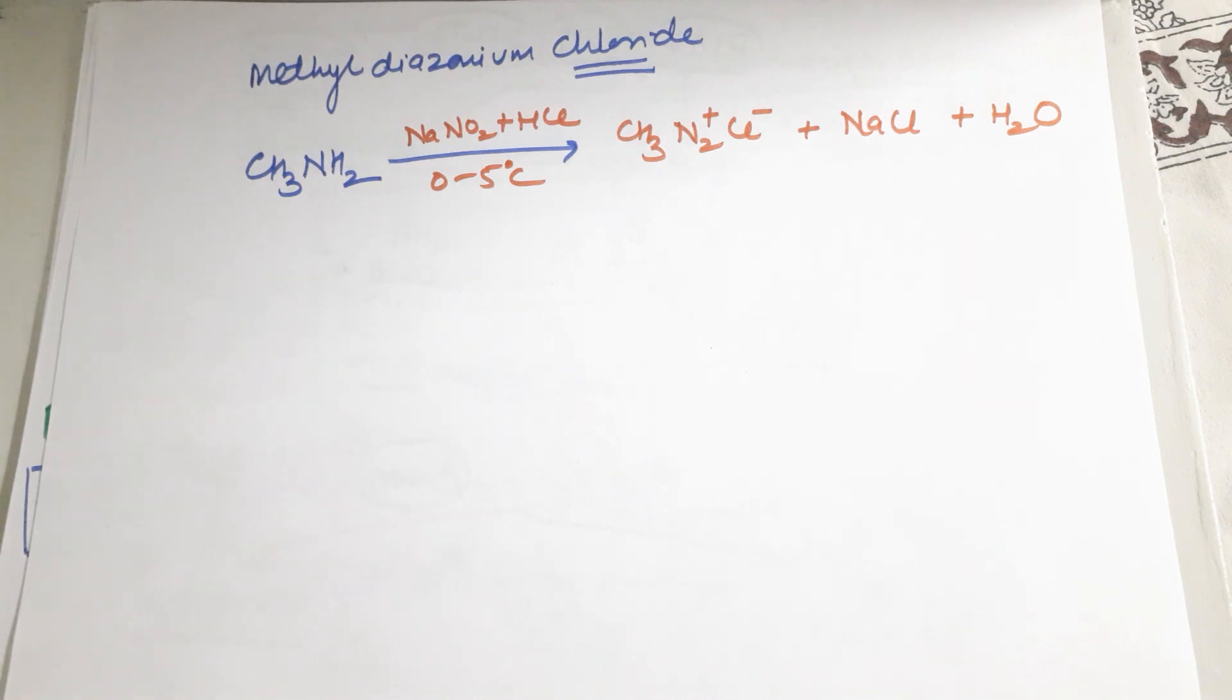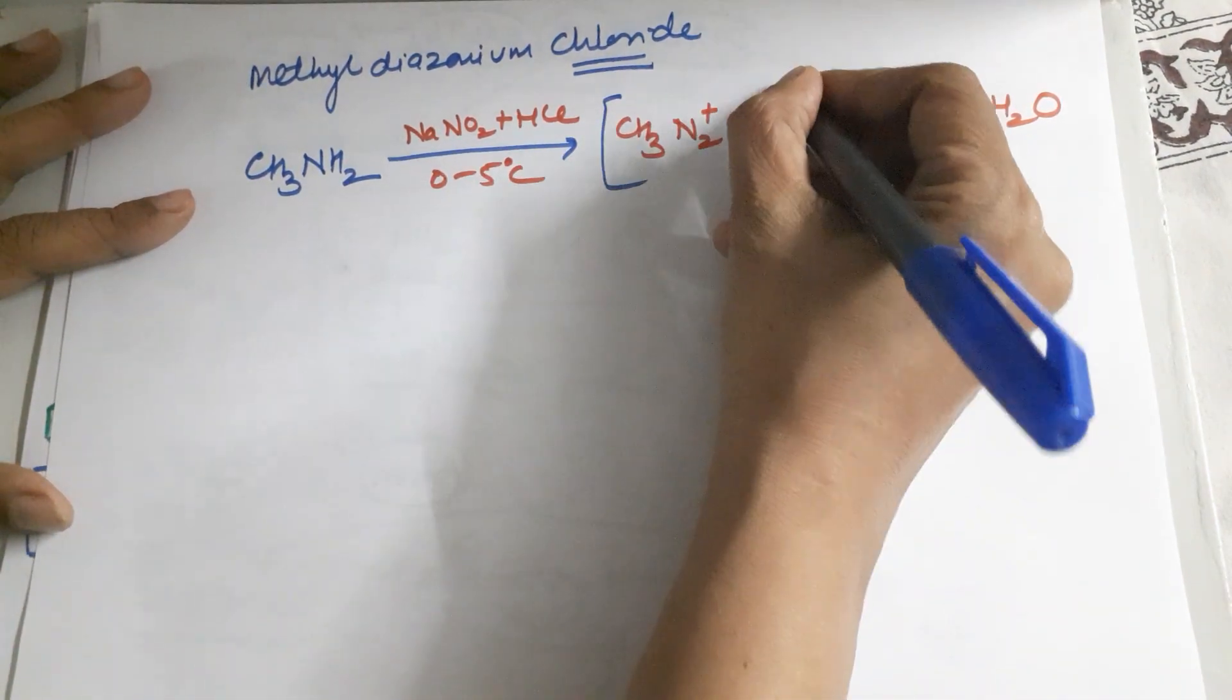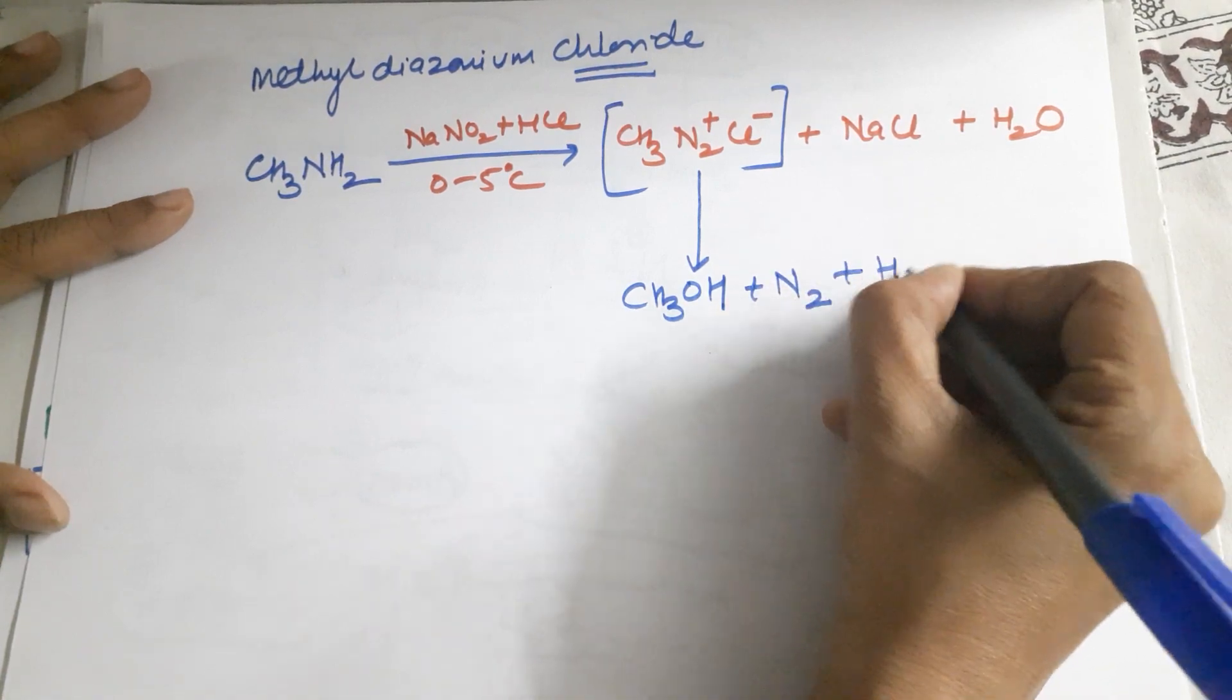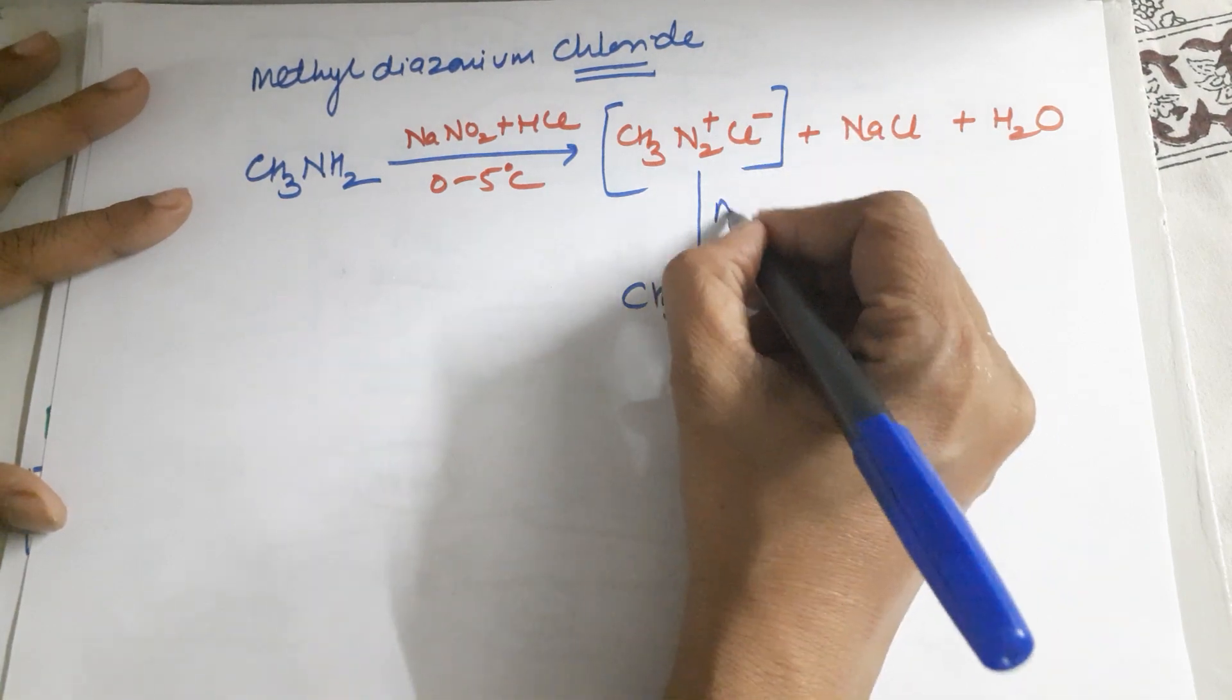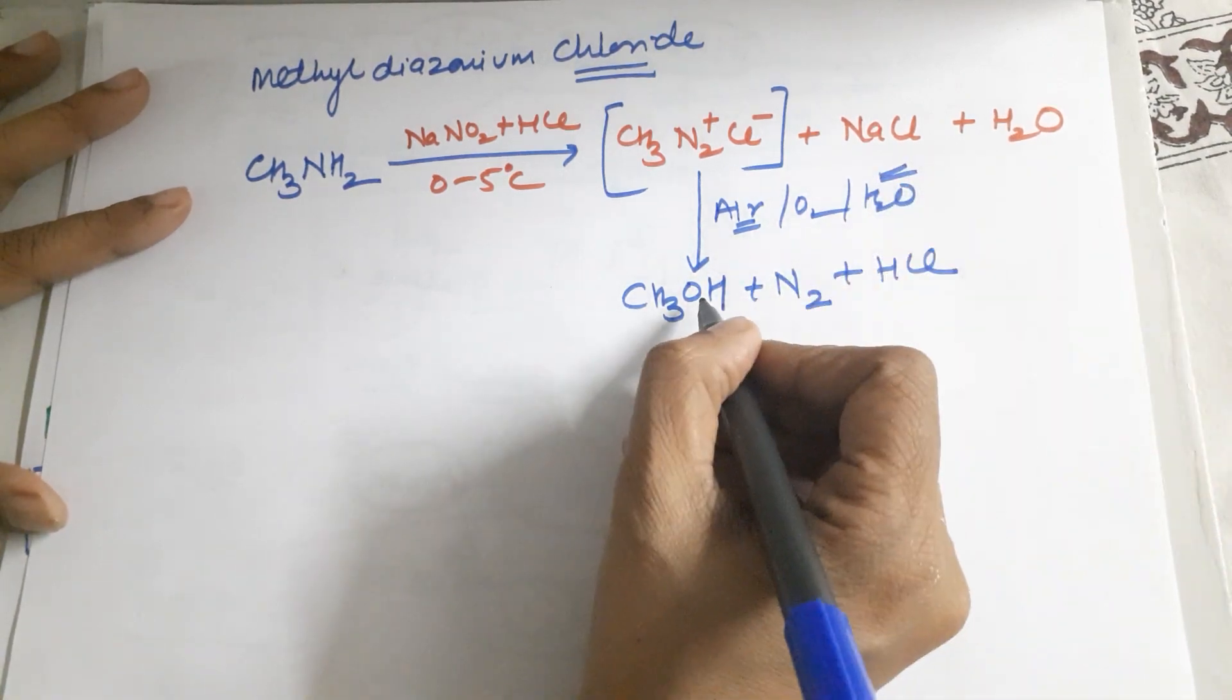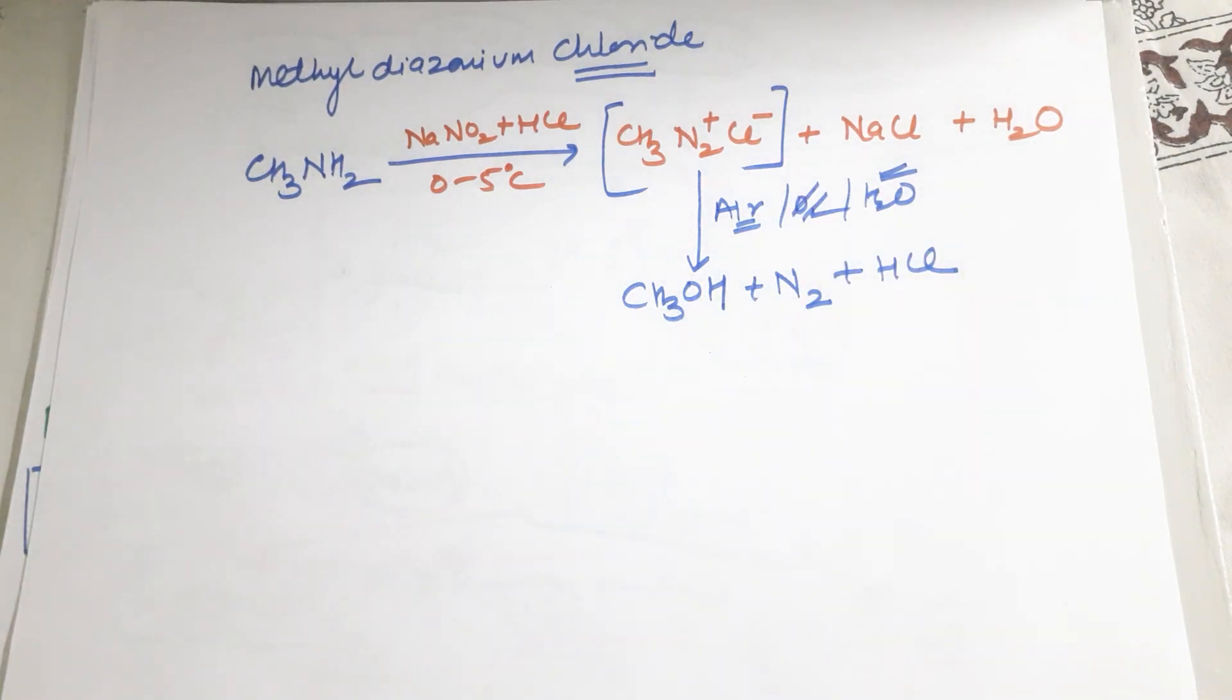Balancing in organic reactions is not important because you're mainly concerned with the organic product. Unfortunately, in this case you would write it like this and quickly transform it into CH3OH plus N2 plus HCl, because this is an unstable entity. It easily decomposes in the presence of air, reacts with oxygen and moisture.